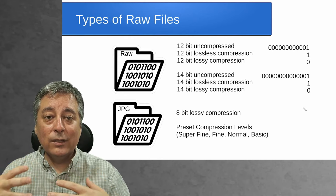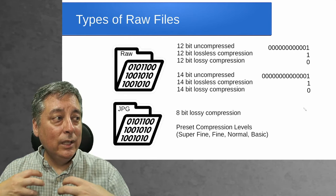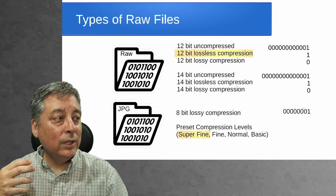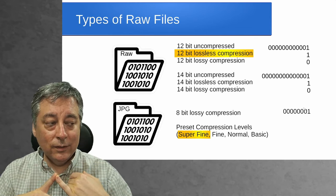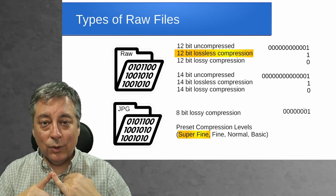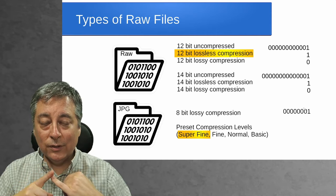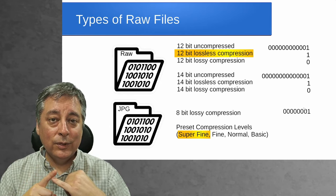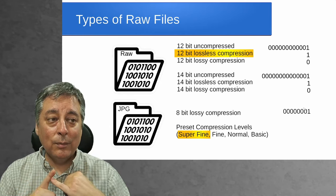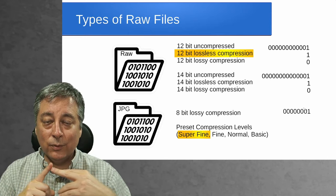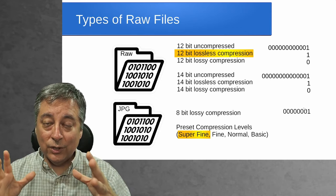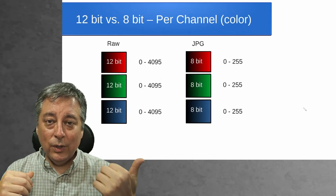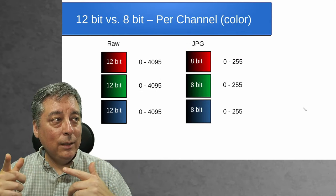I always recommend you use the maximum quality available to your camera. In the case of Olympus, the maximum quality we can use is 12-bit lossless and superfine. The RAWs are fixed to 12-bit lossless compression. But on the JPEGs, I recommend you set it to superfine, which gives you the least amount of compression. If you have 14-bit uncompressed or 14-bit lossless compression available on your camera, choose that — it'll give you better quality, particularly in the shadow areas. Let's compare a 12-bit RAW image to an 8-bit JPEG image.